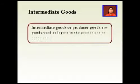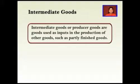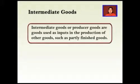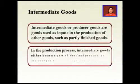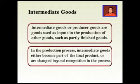Intermediate goods, or producer goods, are goods used as inputs in the production of other goods, such as partly finished goods. They are goods used in the production of final goods. A firm may make and use intermediate goods, or make them, sell them, and use them. In the production process, intermediate goods either become part of the final product or are changed beyond recognition in the process. This means intermediate goods always serve the purpose of making a final good.